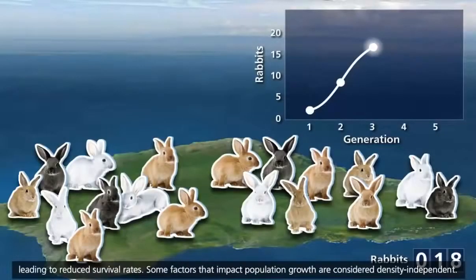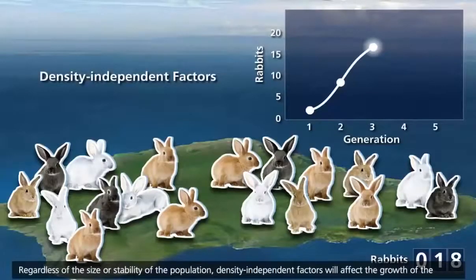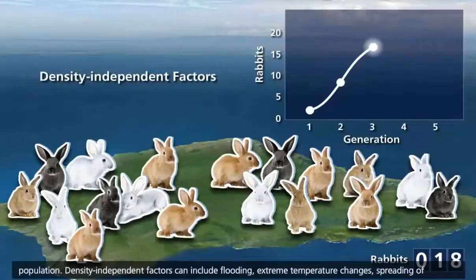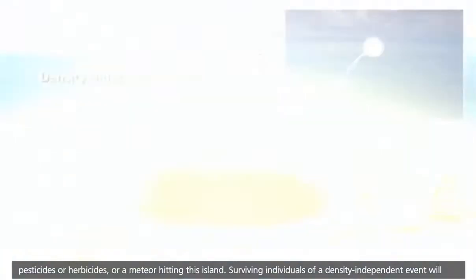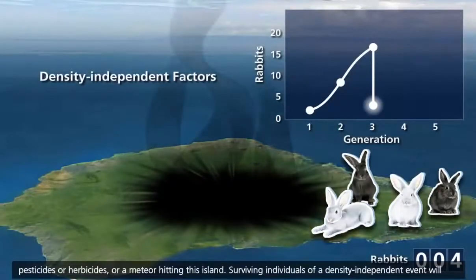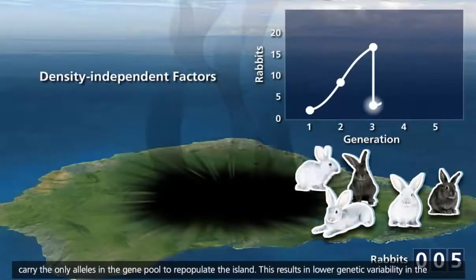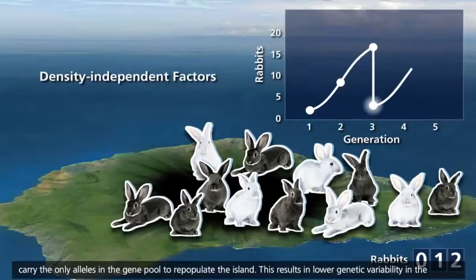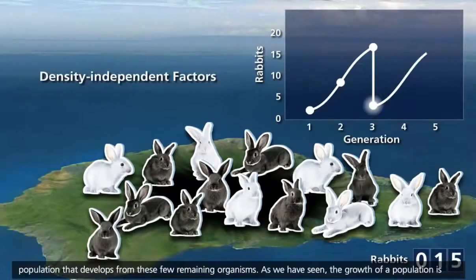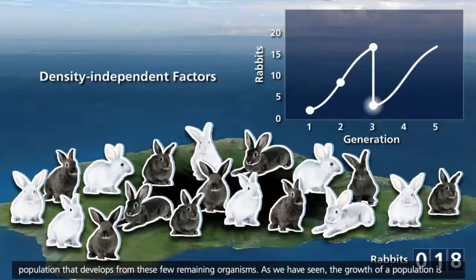Some factors that impact population growth are considered density-independent. Regardless of the size or stability of the population, density-independent factors will affect the growth of the population. Density-independent factors can include flooding, extreme temperature changes, spreading of pesticides or herbicides, or a meteor hitting an island. Surviving individuals of a density-independent event will carry the only alleles in the gene pool to repopulate the island, resulting in lower genetic variability in the population that develops from these few remaining organisms.